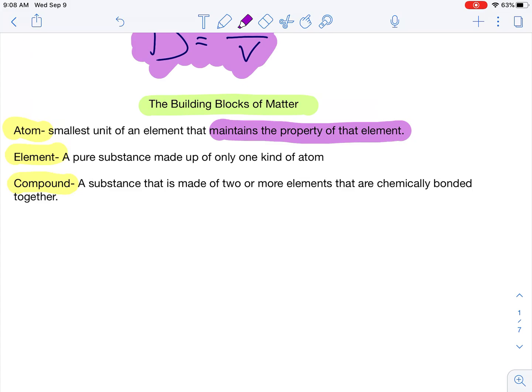If I have a whole bunch of atoms together, they're only one kind of atom, we call that an element. And then, if I have two or more elements that are chemically bonded together, we call that a compound.